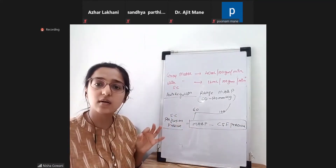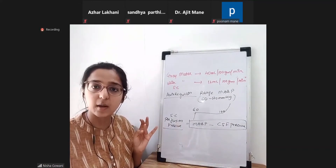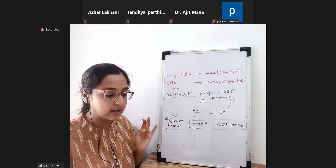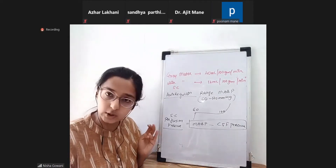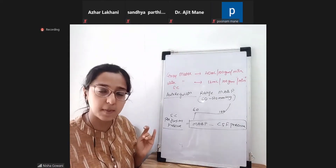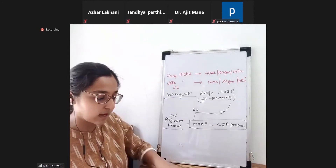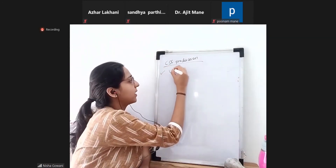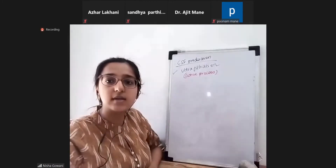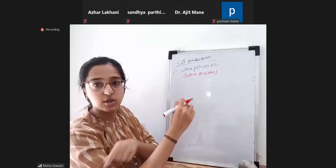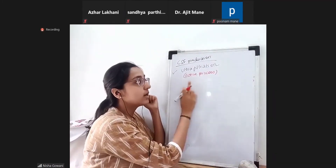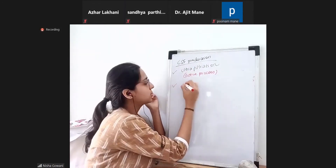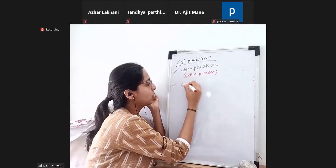What is going to affect spinal cord perfusion? Hypoxia and hypercarbia will increase blood flow. Hypocarbia and hypothermia will decrease the spinal cord blood flow. CSF is produced by a process known as ultrafiltration — it is an active process that needs energy.